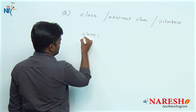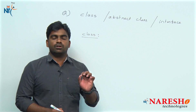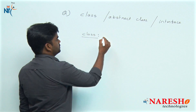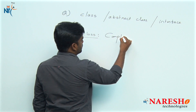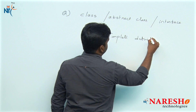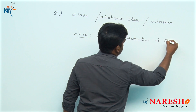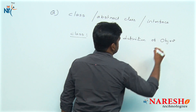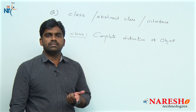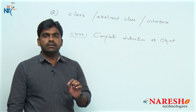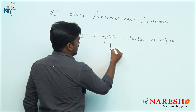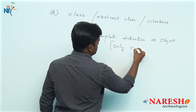What is a class? A class is the complete definition of an object — 100 percent complete. This means only concrete methods are allowed. What is a concrete method? A method which has a body is called a concrete method. So in a class, only concrete methods are present.